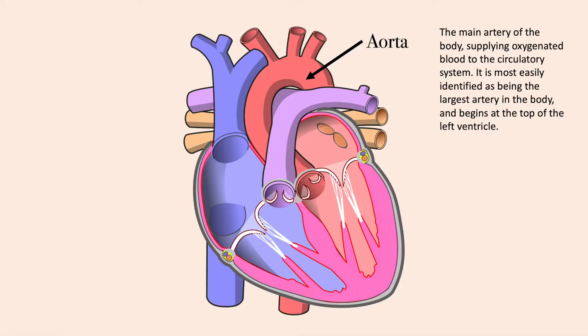The aorta is the main artery of the body, supplying oxygenated blood to the circulatory system. It is most easily identified as being the largest artery in the body and begins at the top of the left ventricle.